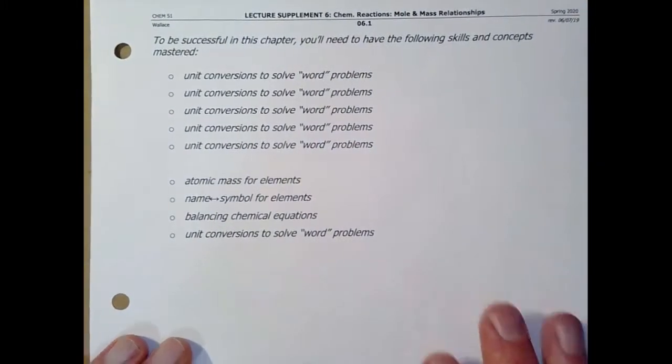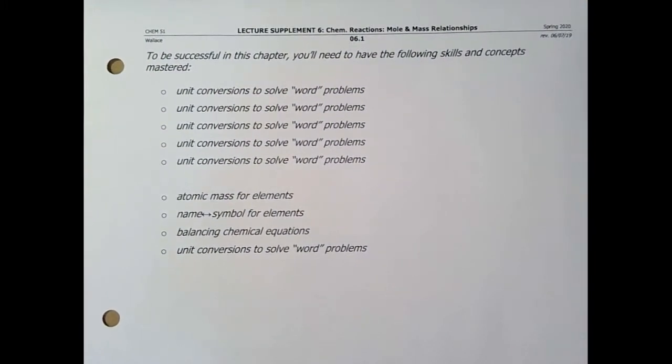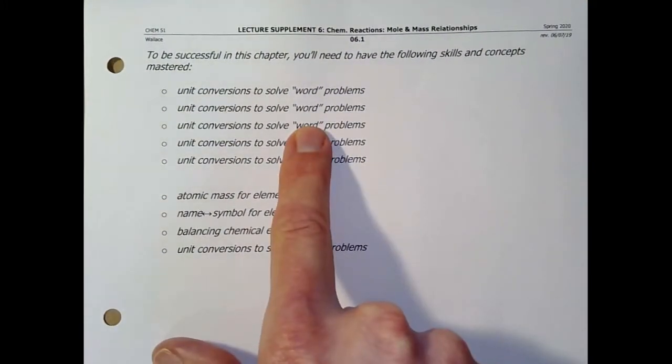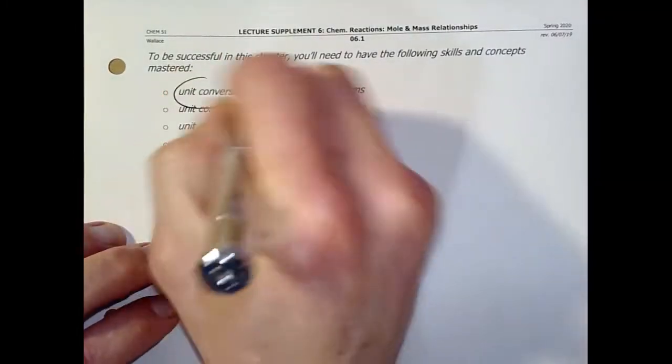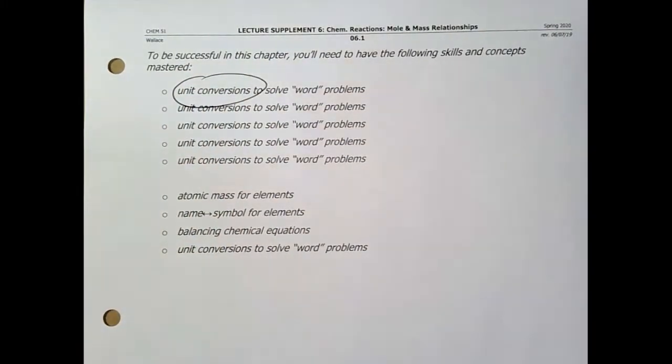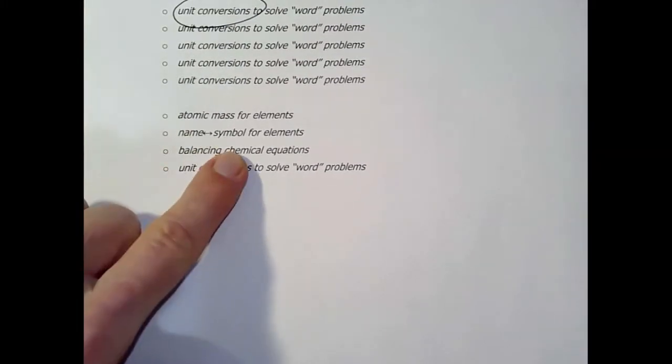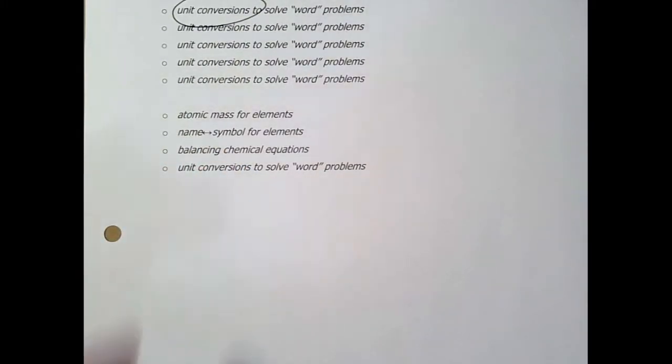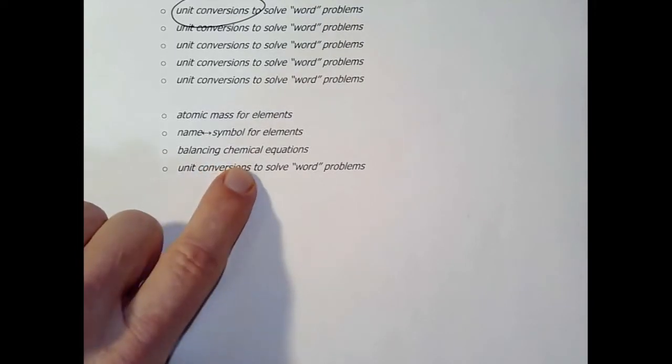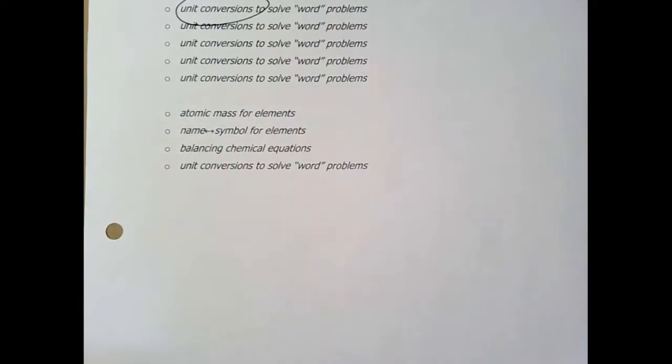If we look at page 6.1, I have a hint about what's coming up. This is it: unit conversions. Remember chapter one and so many chapters. We're going to know some unit, we know some ratios, and we're going to know the units we want to get to, and that's going to be our guideline for solving these problems. A reminder: How do I get atomic mass for an element? Do I know the names and symbols for elements? Can I balance chemical equations? Chapter five. And then there's unit conversions for word problems.